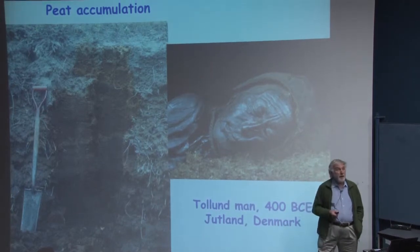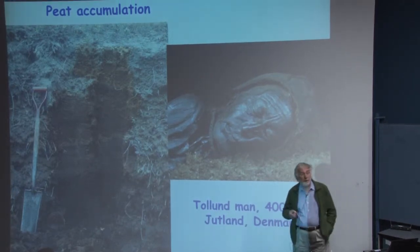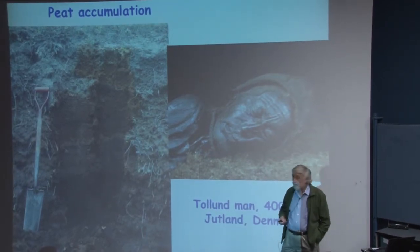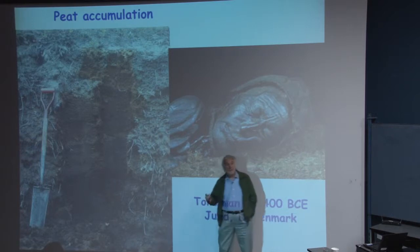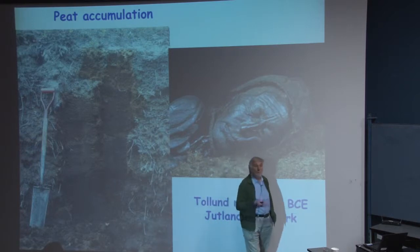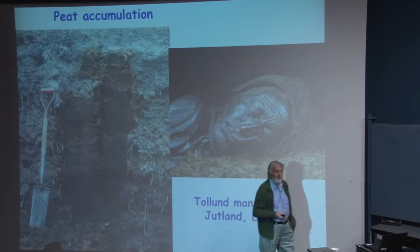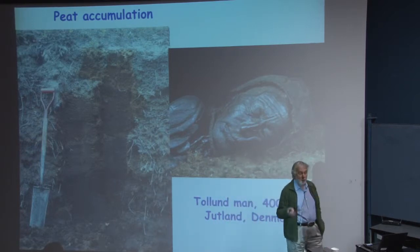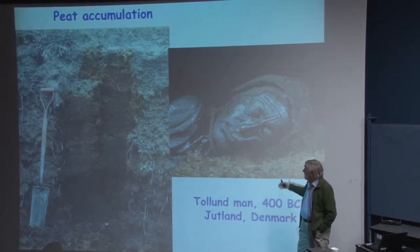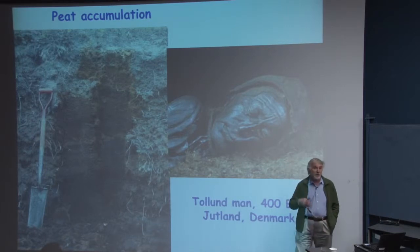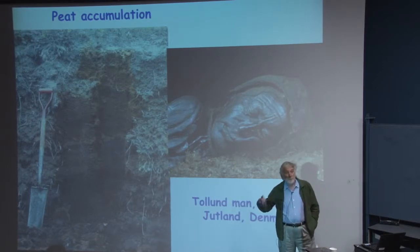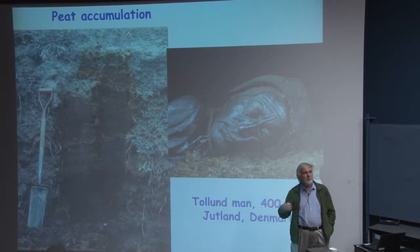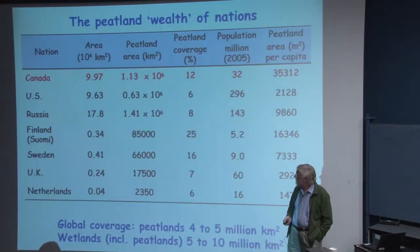Peatlands are defined by the accumulation of organic matter. The profile on the left can go down to five or six meters of poorly decomposed organic matter. They are great preserves archaeologically and also in terms of pollen records because of the slow rates of decomposition of organic matter.